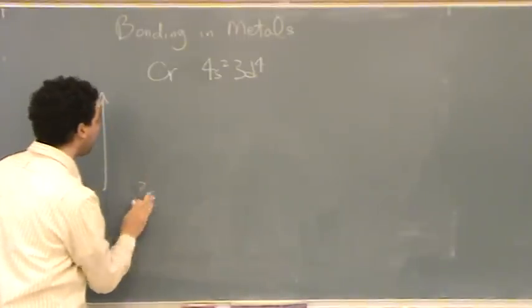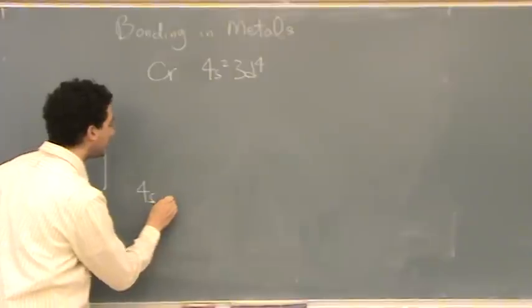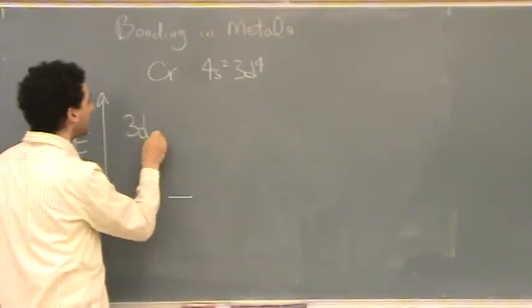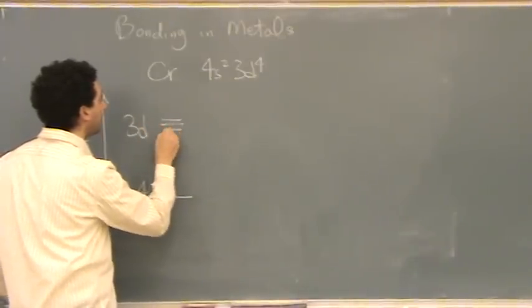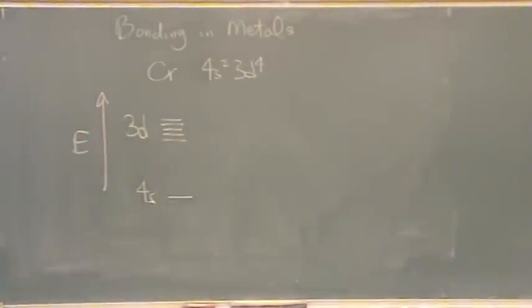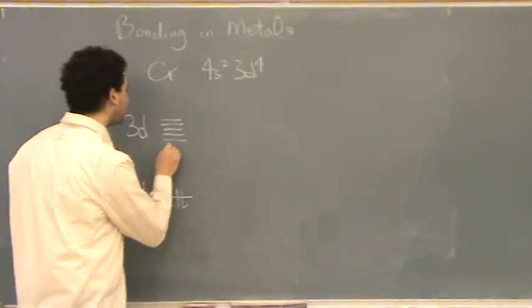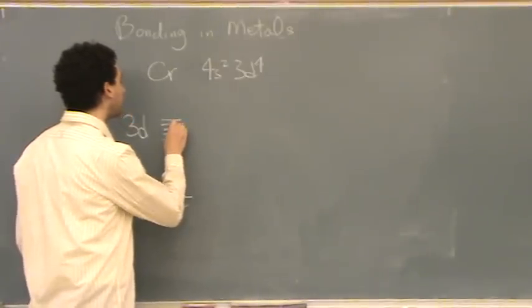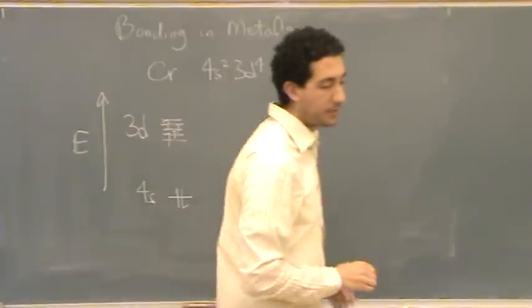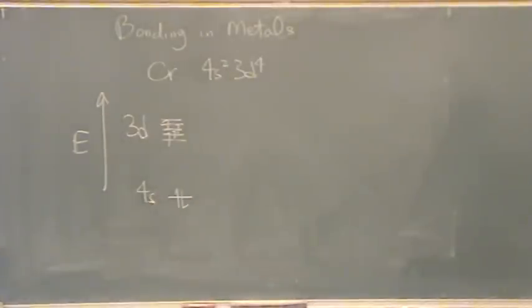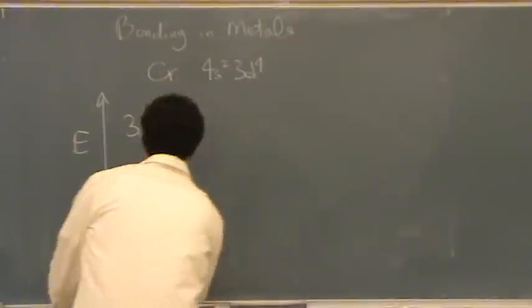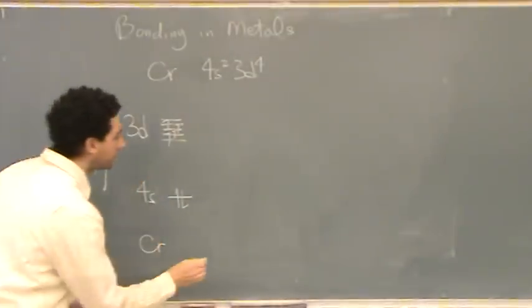We've got the 4s level down here and the 3d level up here. That d-orbital, there's five d-orbitals, so there's five lines here. Let's fill this in: 4s2, 3d1, 2, 3, 4, just drawing in the four electrons there. Notice what happens - this is for one chromium atom.